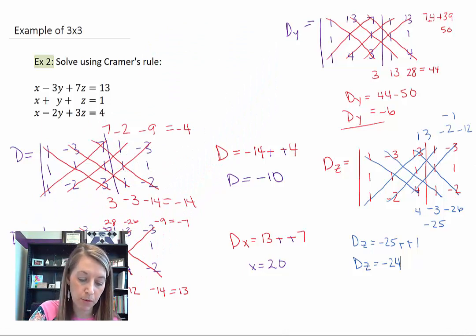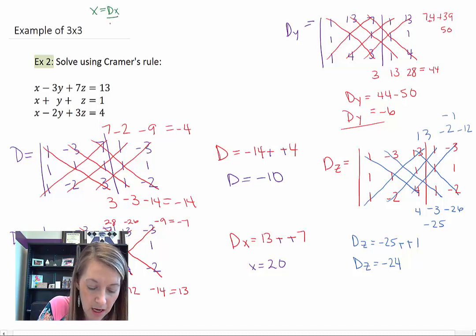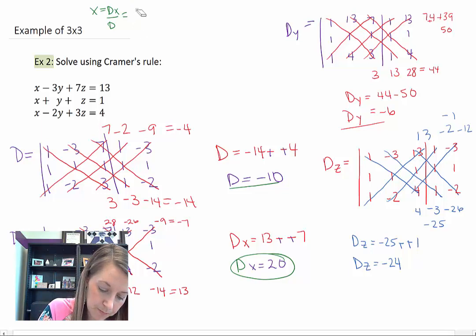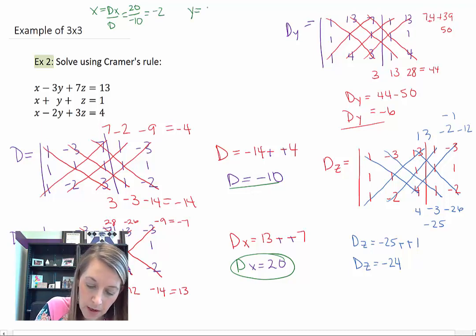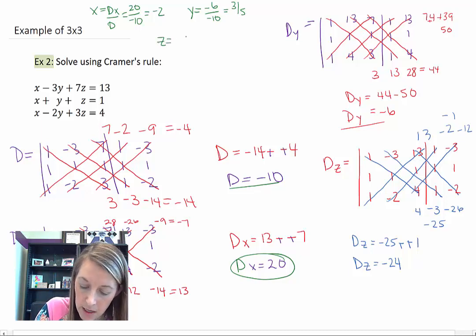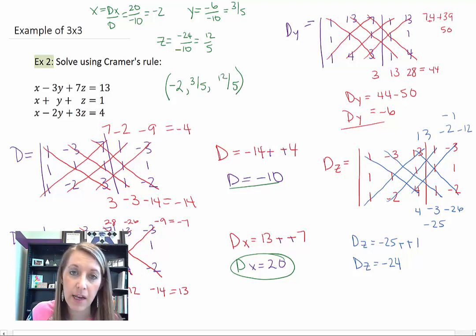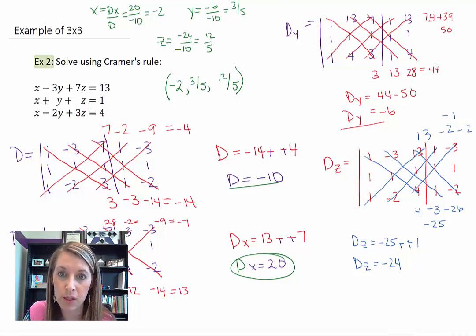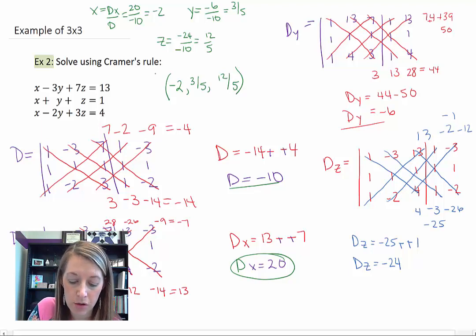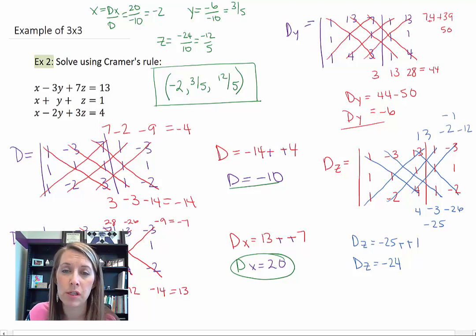To get the final answers, I just do simple division. X equals D sub x divided by D: 20 divided by negative 10, which gives negative 2. Y equals D sub y divided by D: negative 6 divided by negative 10, which reduces to 3 fifths. Z equals D sub z divided by D: negative 24 divided by negative 10, which reduces to 12 over 5. So the ordered triple answer is negative 2, 3 fifths, and 12 fifths. I'd encourage you to verify this answer using your graphing calculator.